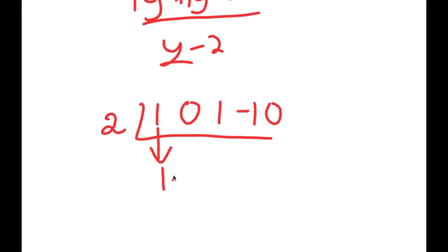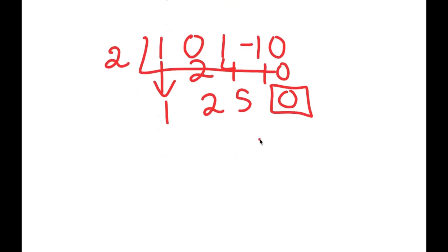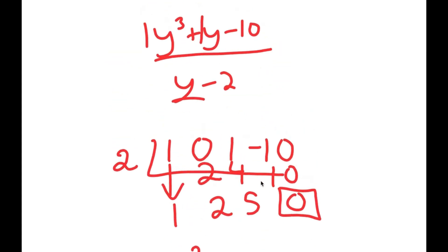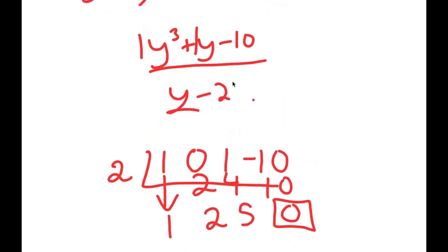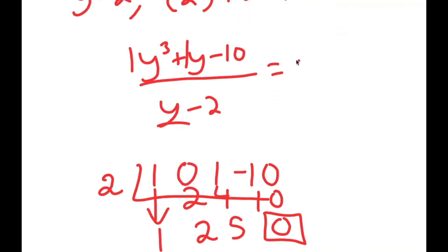To perform the synthetic division, I drop down 1. 2 times 1 is 2, so I put 2 here. 0 plus 2 is 2. 2 times 2 is 4. 1 plus 4 is 5. 2 times 5 is 10. Negative 10 plus 10 is 0, so I get a remainder of 0 and coefficients 1, 2, 5, giving me y squared plus 2y plus 5. So y cubed plus y minus 10 divided by y minus 2 is equal to y squared plus 2y plus 5.